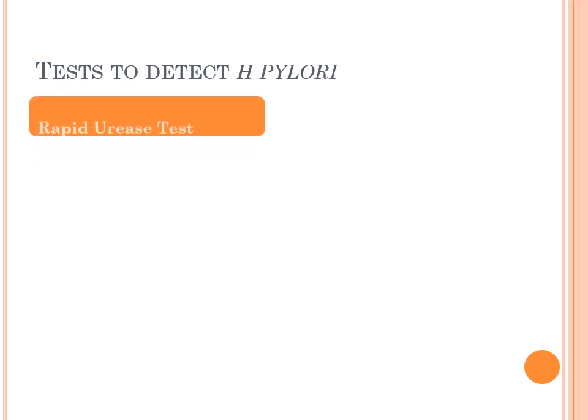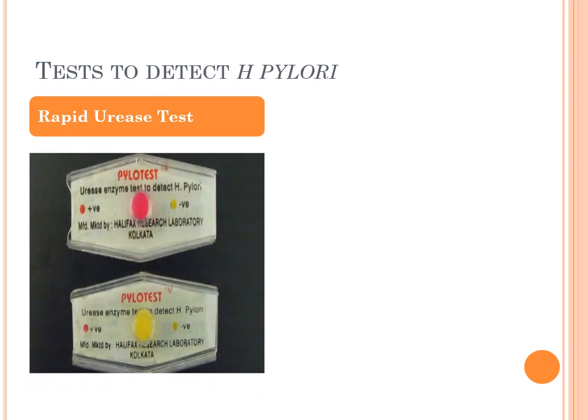The rapid urease test — here is one of the kits used to perform it, which I used for my thesis. At the bottom you see a negative test result. What you do is take a punch biopsy from the gastric mucosa, crush the tissue, and place it in the yellow part of the kit.